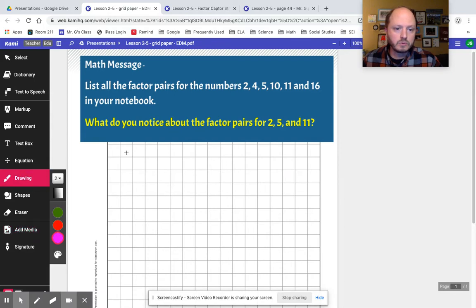Let's see, drawing tool. And for the number 2, we have factors of 1 and 2. Those are our factors, right? We have 2 factors. We have, for 4, we have 1 and 4. And we also have 2.